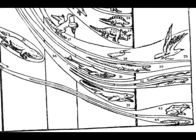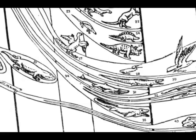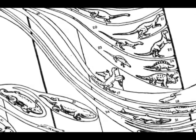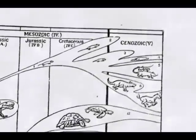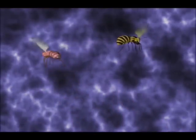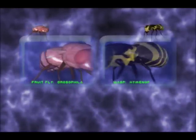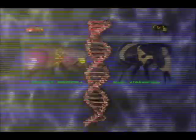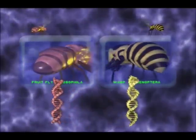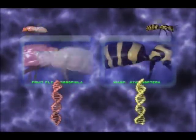According to modern Darwinism, if two structures are similar because of common ancestry, each structure should be produced by similar genes and go through a similar pattern of development in the embryo. But contrary to these predictions, biologists are learning that homologous structures can be produced by different genes and follow different patterns of development. For example, biologists consider the body segments of fruit flies and wasps as homologous. Darwinism predicts that these similarities should be due to the same gene. But in fact, different genes account for the development of body segments in these insects. This contradicts the idea that homology must point to common ancestry.